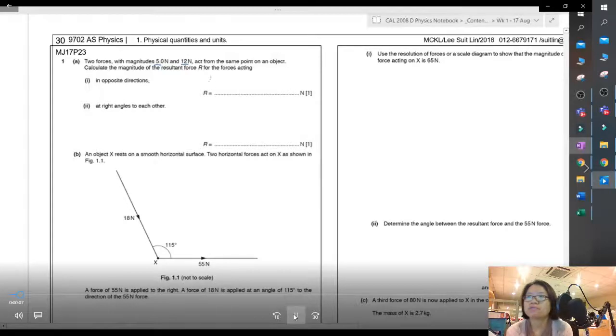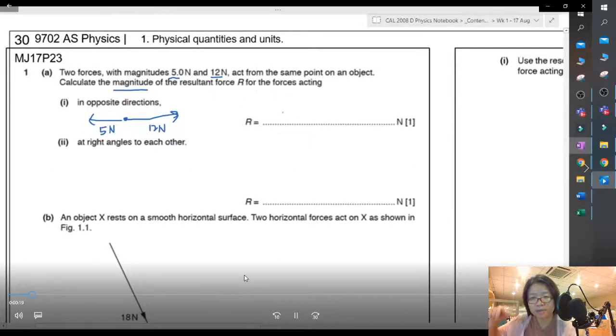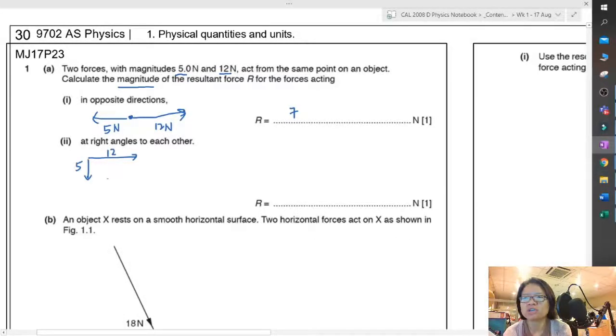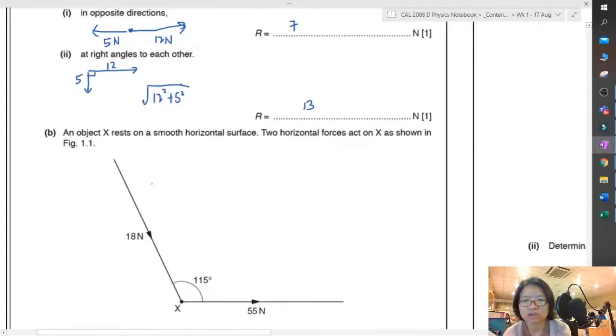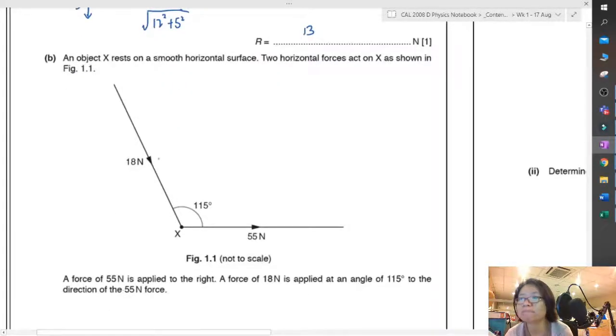Okay, so you have two forces, 5 and 12 Newton, acting from the same point on an object. Calculate the magnitude force of R acting in opposite direction. So if you want to find the resultant force acting in opposite direction, it's parallel. And if it's parallel, then that's the best thing ever. You can just minus, let's say 7. Right angle. So if right angle, you get 12, you get 5. So finally, Pythagoras law, 5, 12, 13. Okay, or you can obviously calculate if you want.